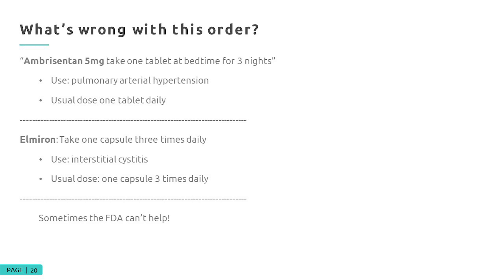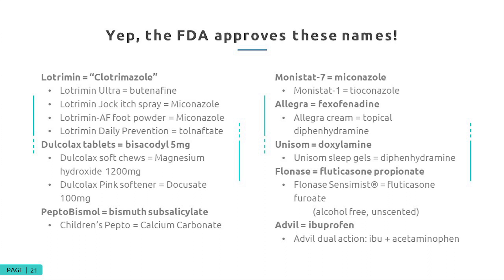Let's look at more challenges with FDA-approved naming. The FDA allows the Lotrimin brand to contain different active ingredients depending on the product: the original Lotrimin contains clotrimazole, Lotrimin Ultra contains butenafine, the jock itch spray and AF foot powder contain miconazole, and Lotrimin Daily Prevention contains tolnaftate. Similarly, Dulcolax stool softener is docusate 100 mg, while Dulcolax soft chews are magnesium hydroxide 1,200 mg — and the tablets are bisacodyl.